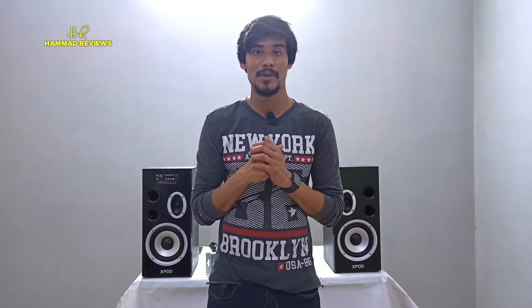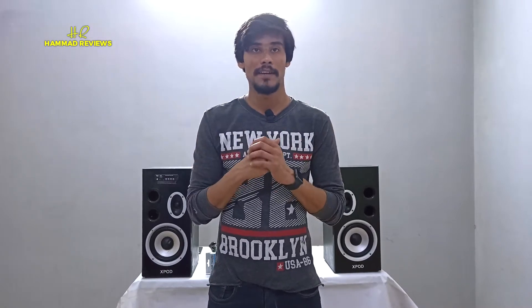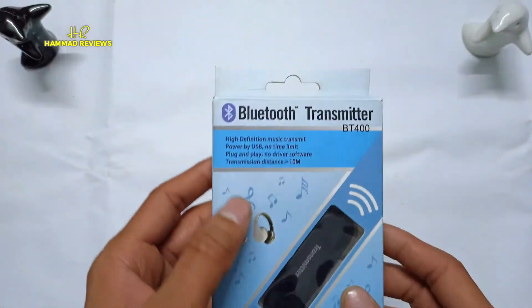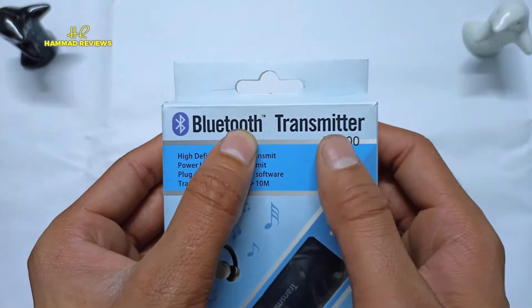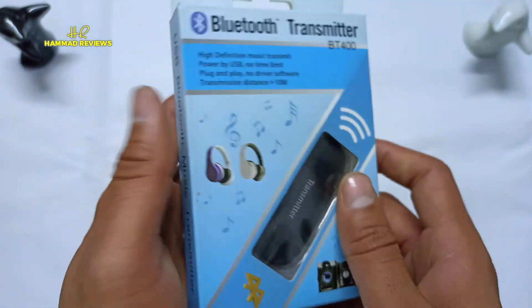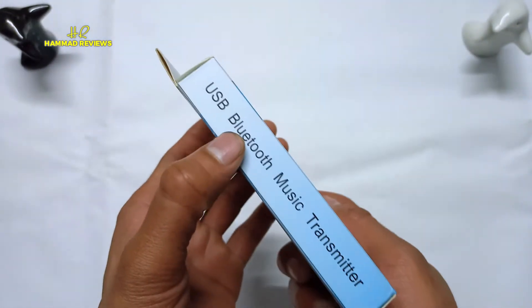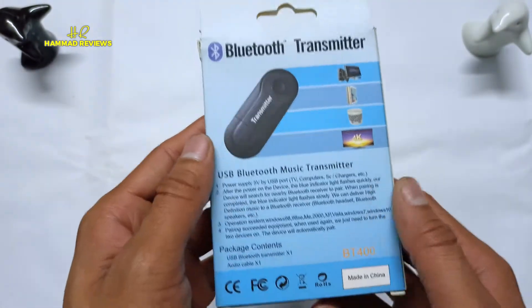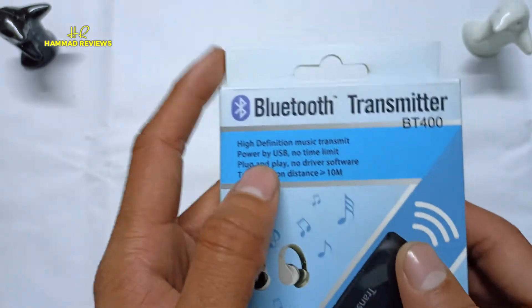If you like, please subscribe to our channel. We are going to unbox this. This is a Bluetooth Transmitter, BT400 is the model number. This is a USB Bluetooth Music Transmitter. If we look at the features of this: